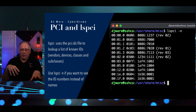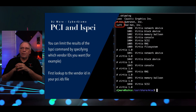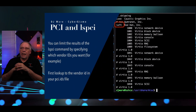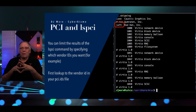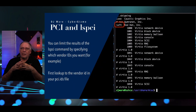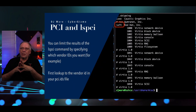I open up my pci.ids file and search for the string 1AF4. I found it — it's owned by Red Hat. Because this is on a virtual machine, those are the virtual device drivers used for a number of things: your network device, your block devices, your memory, your console, and so forth. There's a whole bunch of them listed.